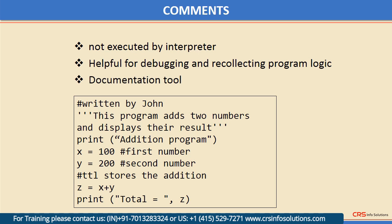Comments serve as an important documentation tool, and writing them is considered good programming practice. To mark more than one successive lines as a comment, each line should start with a hash symbol. Text over multiple lines between triple inverted commas is also treated as a comment if it is not a doc string of a function or a class. Don't worry about the term 'doc string' — we will come to know about it later.